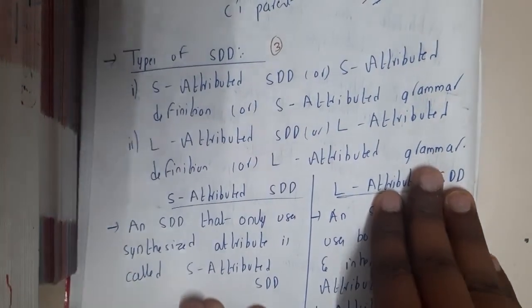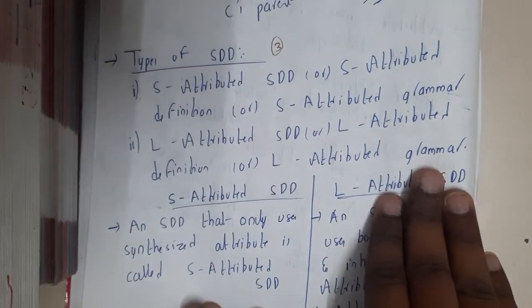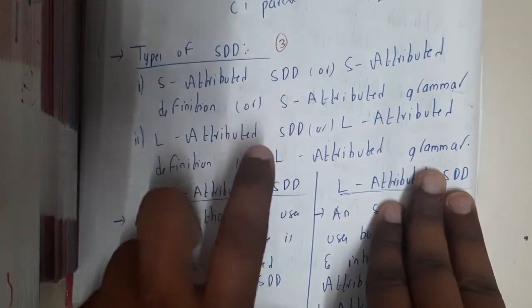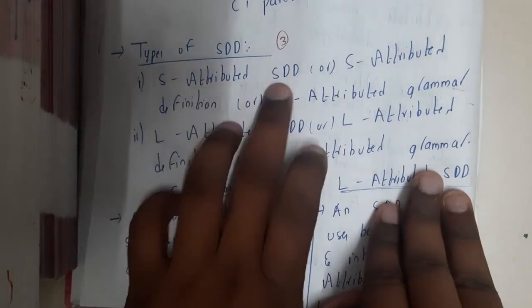Hello guys, we are back with our next lecture. In this lecture, let us go through types of SDD. Basically, there are two types of SDD: the first one is S-attributed and L-attributed.